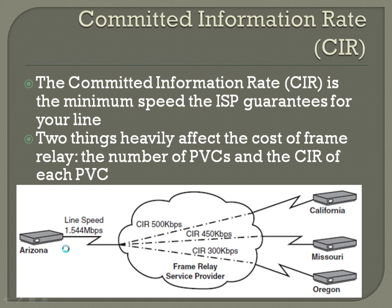If you were ever in a situation where you have multiple PVCs whose CIRs add up to more than your possible line speed, you're getting ripped off. You need to talk to your service provider, because you're basically being charged for CIR that the ISP can't possibly deliver, because the line speed will not accept it.